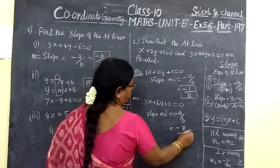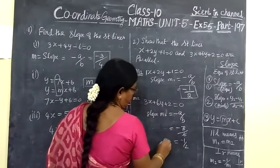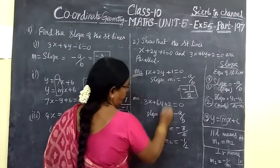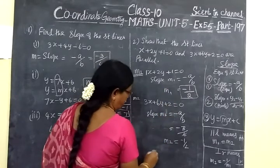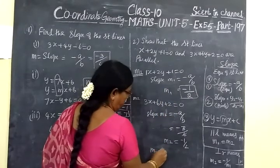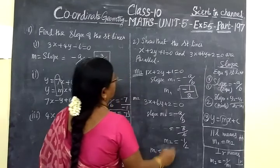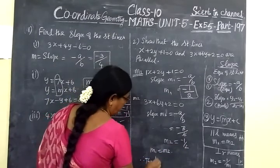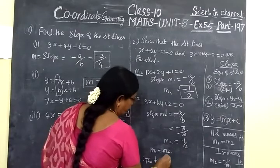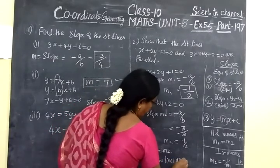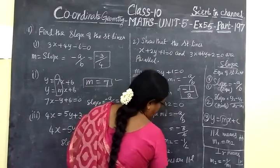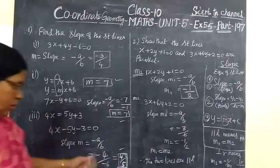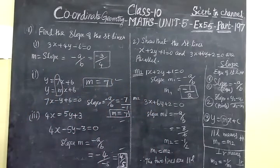So if we cancel, you are getting minus half. So m2 minus half, m1 minus half. So here m1 equals m2. Therefore, the two lines are parallel. So if two slopes are equal, then the given two lines are parallel.